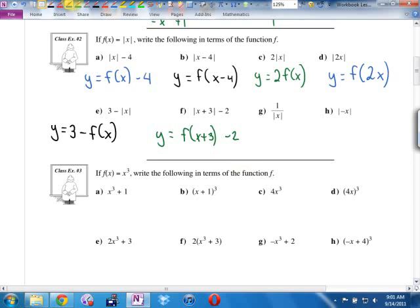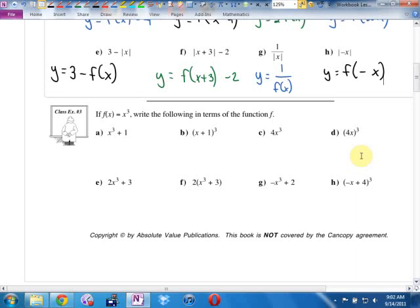Y equals 3 minus f(x). Absolute value is f(x). And they got a 3 minus in front of it. What would that do? Vertical reflection and then 3 up. Inside the function, we have an x plus 3. Outside the function, we have a minus 2. That's 3 left, 2 down.